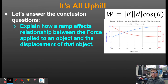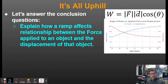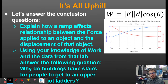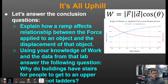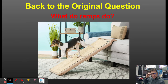A ramp affects the relationship between force applied and displacement: as the ramp gets shallower and shallower, you're traveling a longer displacement and applying a force over a longer distance; however, you're applying less of a force. That's what ramps do — they allow us to apply less force. Using your knowledge of work and the data from the lab: why do buildings have stairs instead of ladders? A ladder is straight up — 90 degrees — that's the shortest displacement but the most force. Going up stairs allows you to apply a lesser force, even though it's a longer displacement.